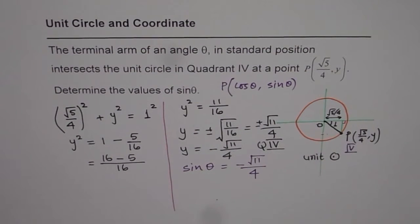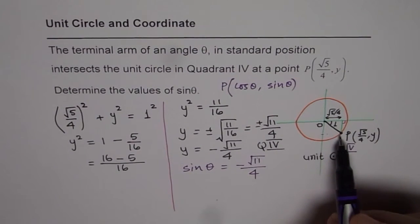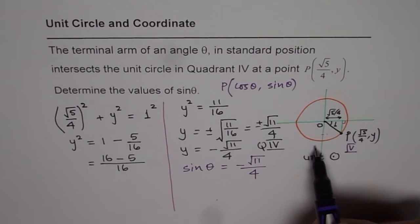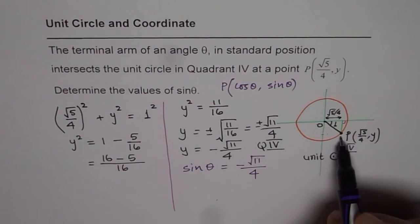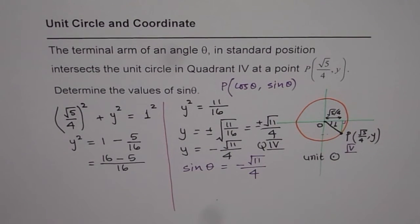So either way solve like this. My suggestion is whenever you have a unit circle and a polar coordinate given to you, or a point on the unit circle is given to you, then use Pythagorean theorem and get your answer. That should be as simple as that. I hope it helps. Thank you and all the best.